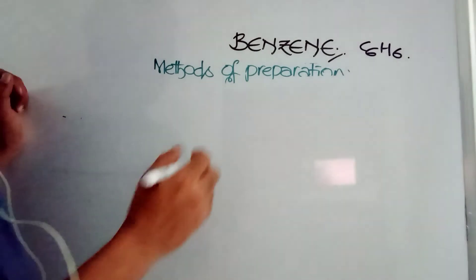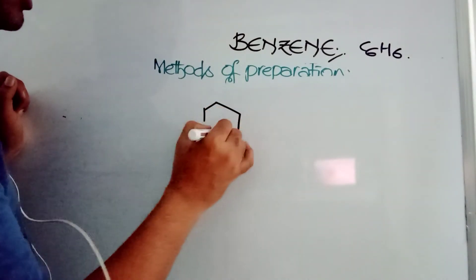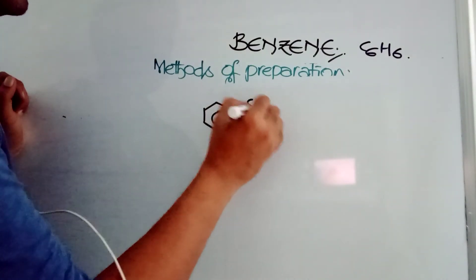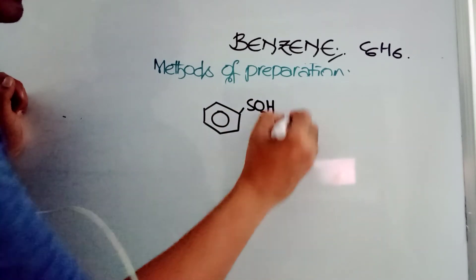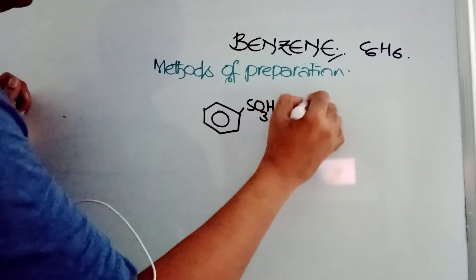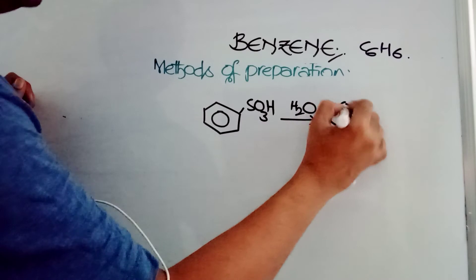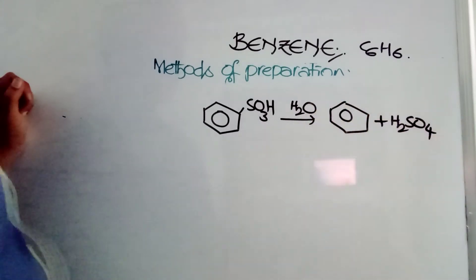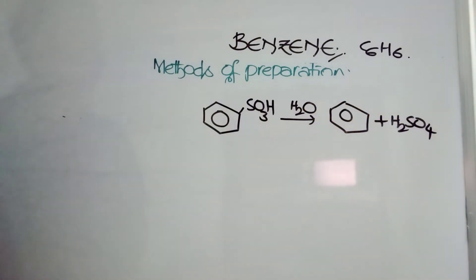We can prepare benzene from benzene sulfonic acid. Benzene sulfonic acid is benzene with SO3H group. When added with water, I am getting your benzene plus H2SO4. Benzene sulfonic acid on hydrolysis gives benzene.